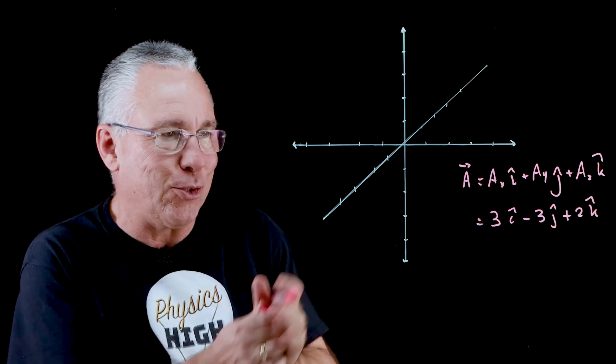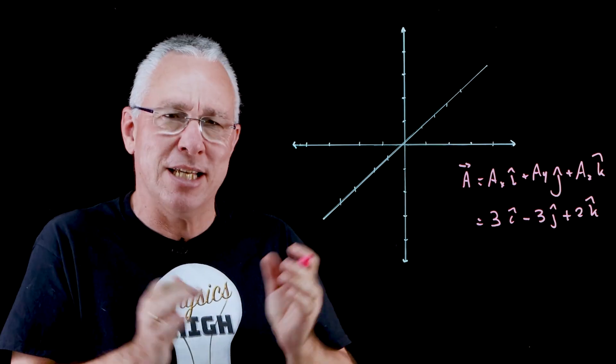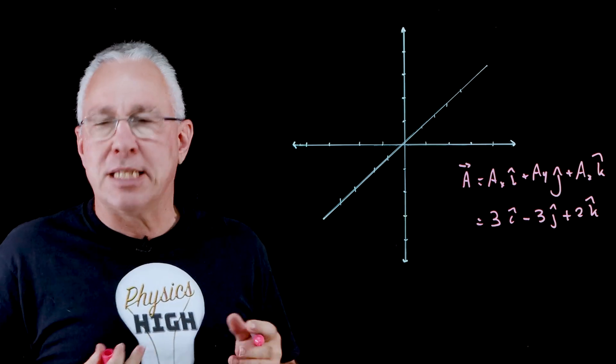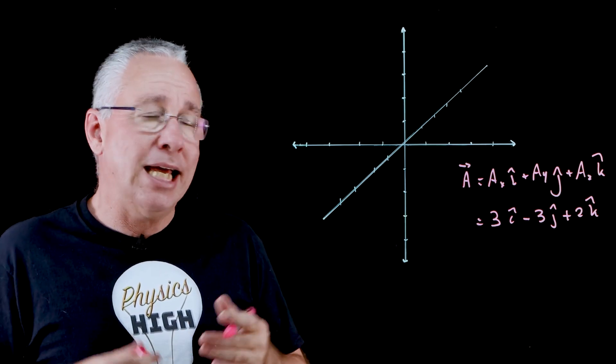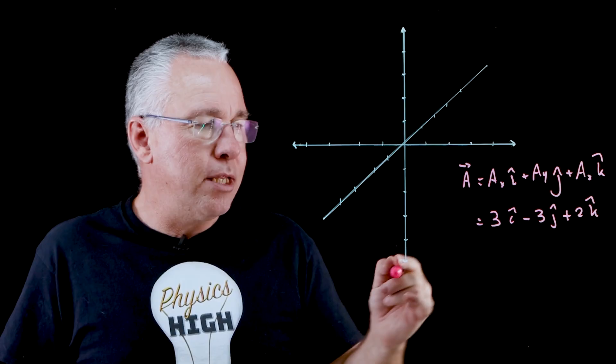I'm not going to draw it, it's always problematic drawing on a two-dimensional space a three-dimensional vector, but you can see that's how we would then write the notation.